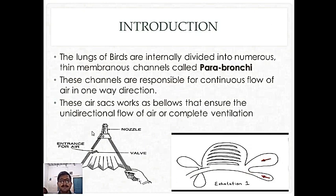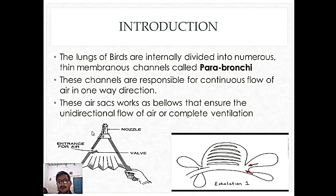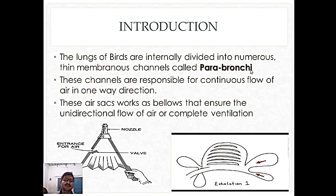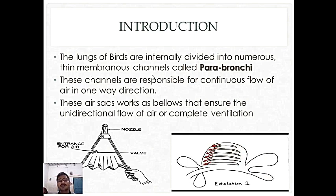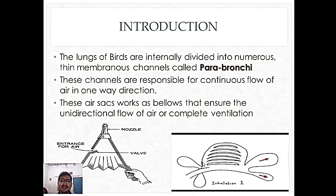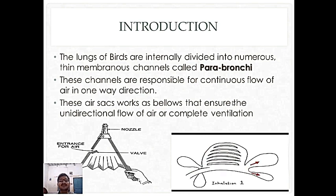Introduction: The lungs of birds are internally divided into numerous thin membranous channels called parabronchi. Ab jo birds ki lungs hain, un ke andar respiratory surface wo parabronchi hai — alveoli nahi hai. Human mein alveoli hote hain, birds ke andar parabronchi hain. Parabronchi bohot bari tubes hoti hain jo lungs ke andar hoti hain, jaisay animated figure mein dikhaya gaya hai. In ke darmiyan oxygen ki gas exchange hogi in these tubes jinka naam hai parabronchi.